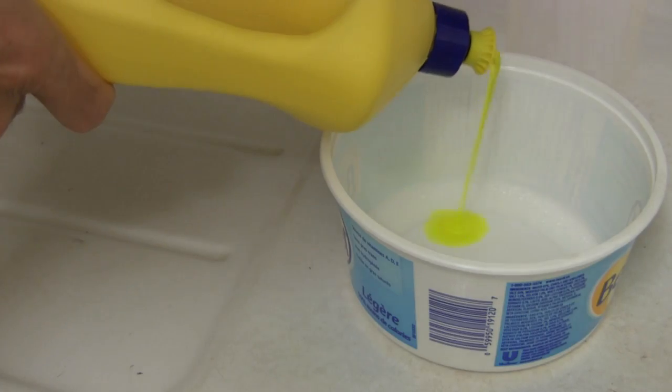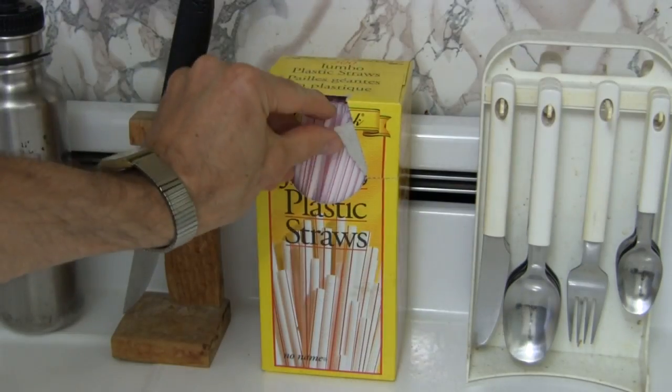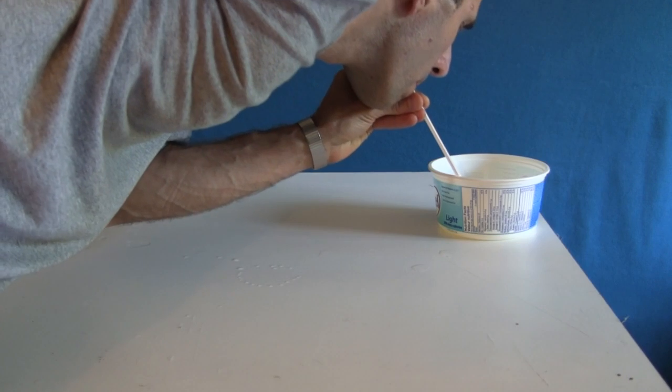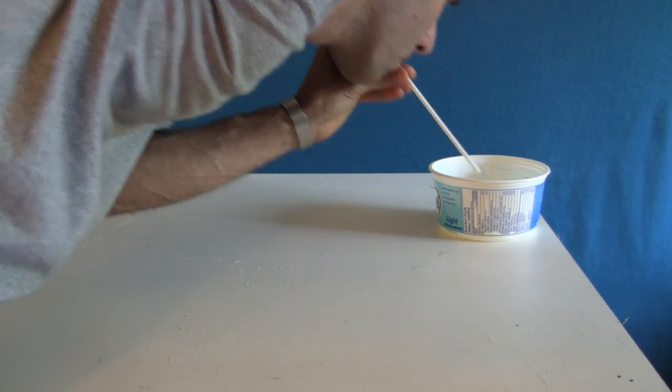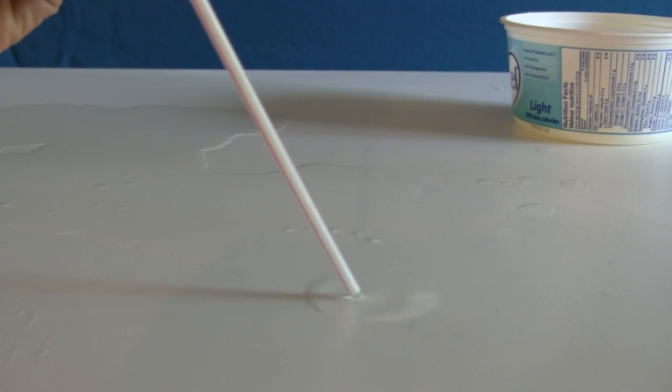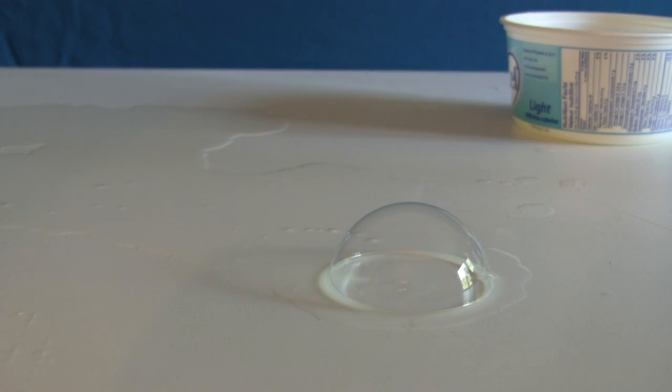Next mix up some dishwashing soap and water. Lastly get a drinking straw. To blow a large bubble, suck some soap into the straw, but not into your mouth, and then blow it gently onto the smooth surface. The surface needs to be coated in soapy water to form the bottom of the bubble.